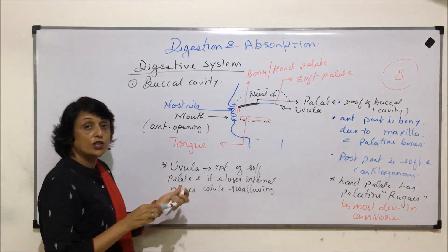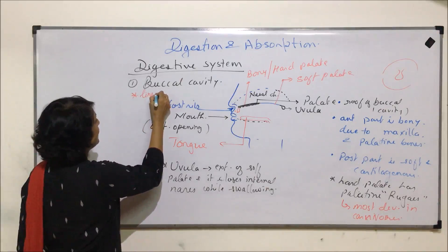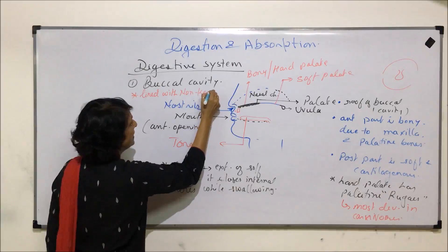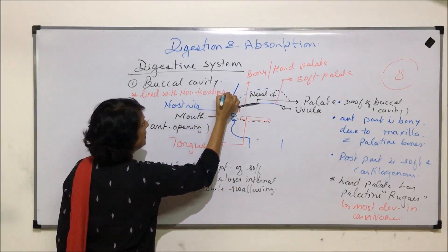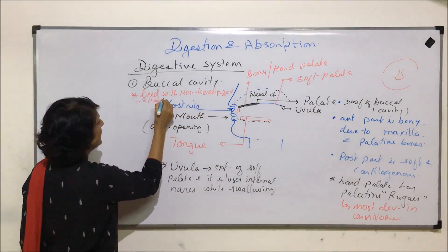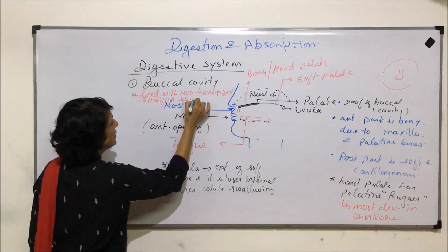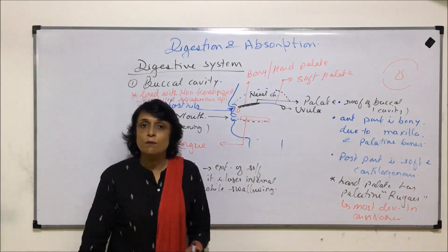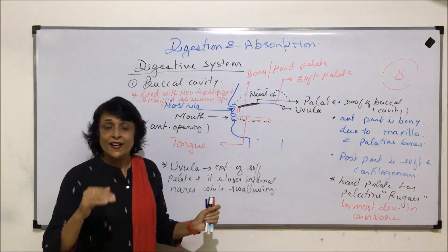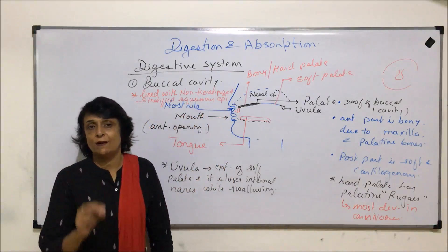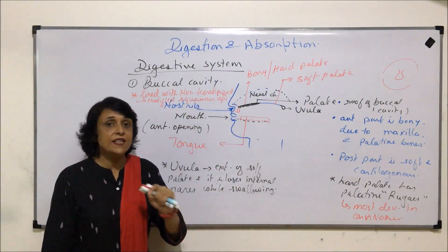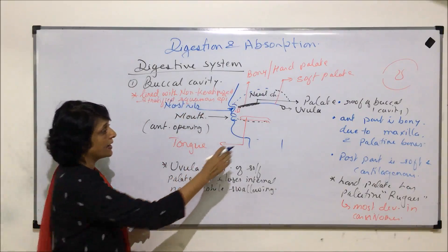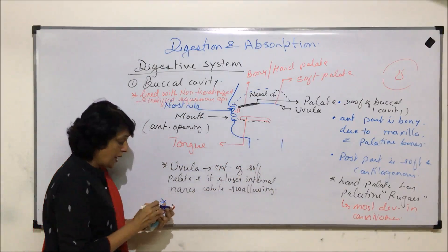A couple more important things about the buccal cavity: the buccal cavity is lined with non-keratinized stratified squamous epithelium. That means the epithelium lining the entire buccal cavity is stratified — it has layers — and those layers are of squamous cells, meaning flat cells, and non-keratinized, meaning there is no keratin deposition in those cells.